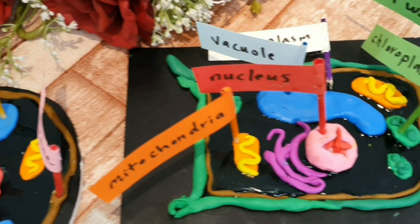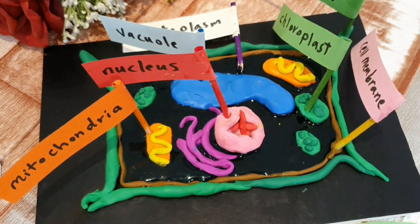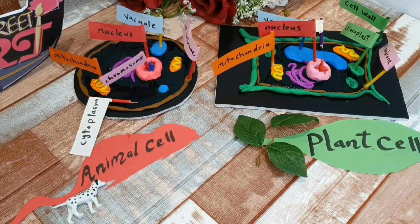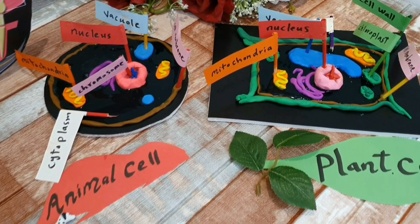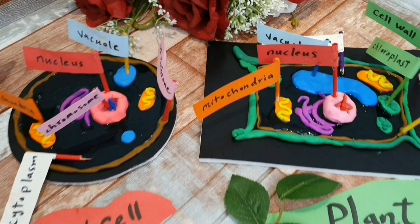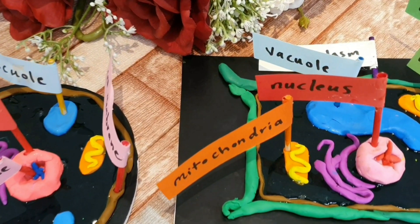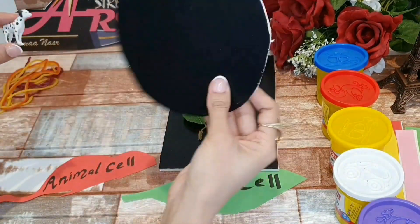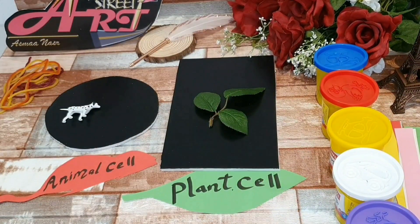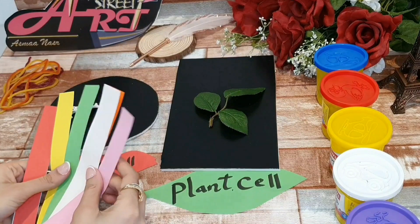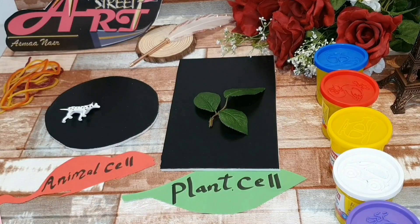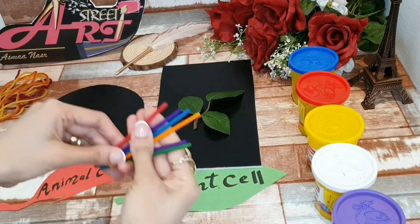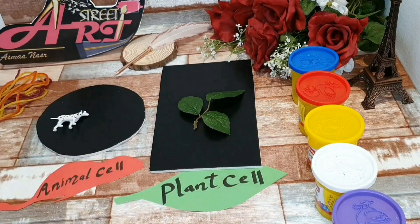You must know that the cell is the building block of life, or the smallest unit of any living thing. Let's see how to make this activity. You will need a piece of chart clay, colored paper, glue, and wooden sticks.